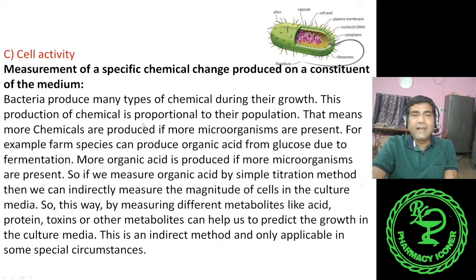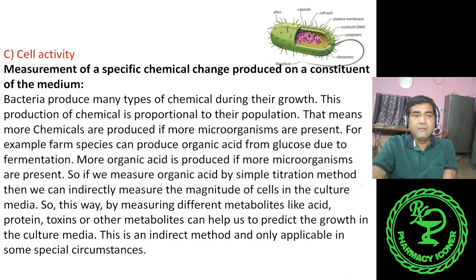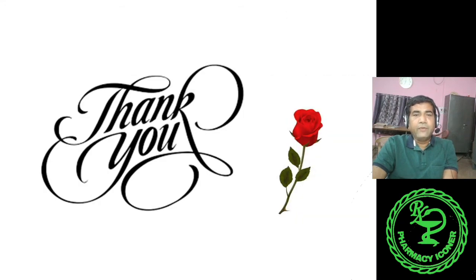So in summary: the first category is cell count, which consists of viable count and total count and is the main focus of the syllabus. Cell mass and cell activity are indirect methods of measuring microbial cells. This is all about the cell count — thank you for watching.